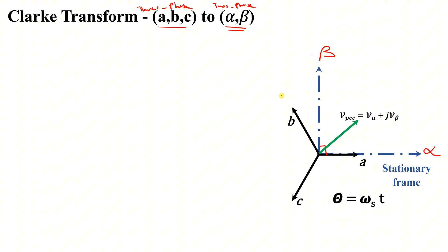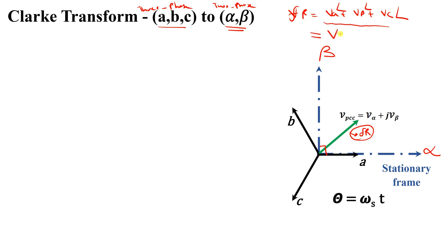The resultant vector Vr is equal to phase A plus phase B plus phase C with their magnitudes. I would like to convert this resultant vector from that form into another form: V_alpha + j·V_beta, which equals V_alpha at angle zero plus V_beta at angle 90 degrees.